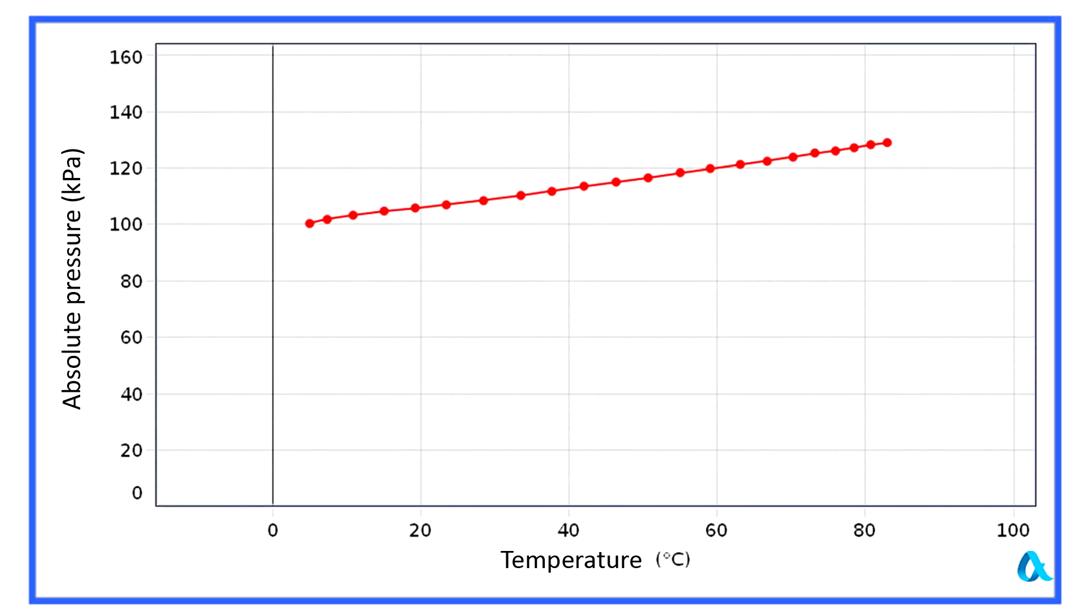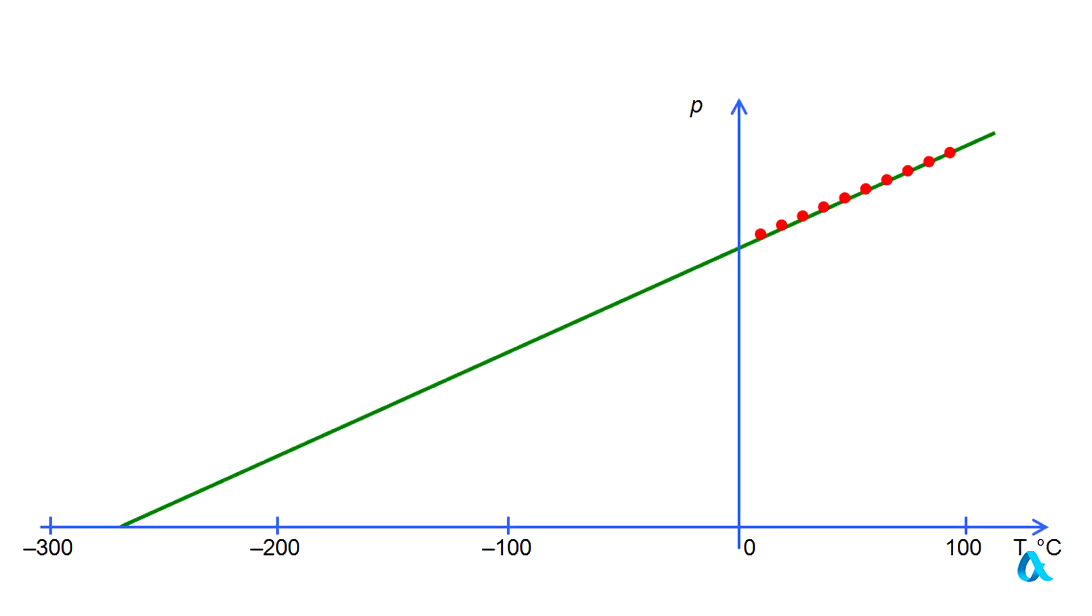This graph shows that when temperature rises, the air pressure inside the vessel increases. We can see that experimental points all rest on a straight line. If we continue this line into a low temperature region, the air pressure will equal zero at approximately minus 270 degrees Celsius.